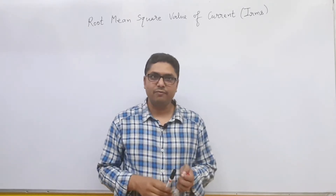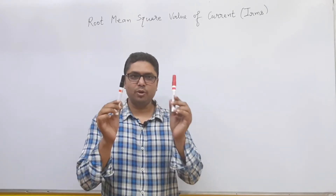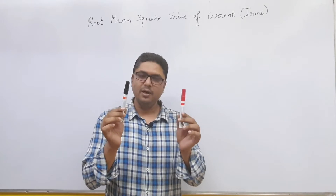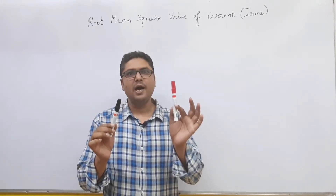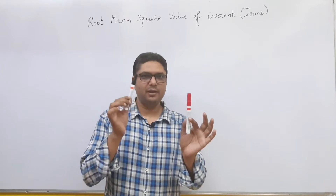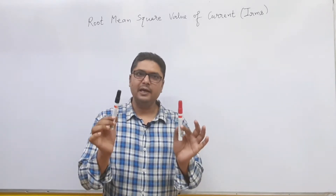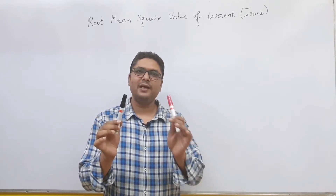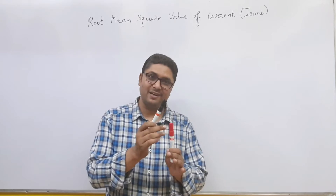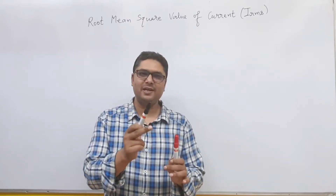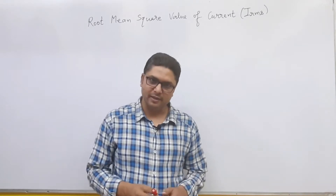That is, if you have two resistors — resistor 1 and resistor 2, both of equal value — and you pass an alternating current through one resistor and a steady current through the other for the same interval of time, and the heating effect produced by the steady current equals the heating effect produced by the alternating current, then that value of alternating current is said to be the root mean square value of current.